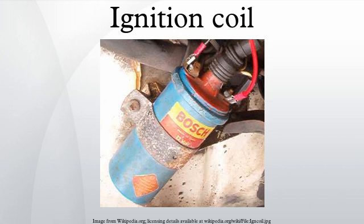The primary winding has relatively few turns of heavy wire. The secondary winding consists of thousands of turns of smaller wire, insulated for the high voltage by enamel on the wires and layers of oiled paper insulation. The coil is usually inserted into a metal or plastic case with insulated terminals for the high voltage and low voltage connections.